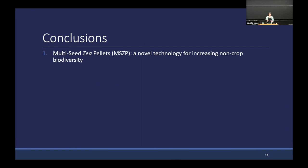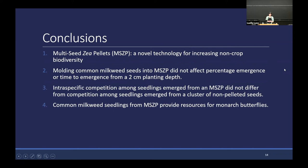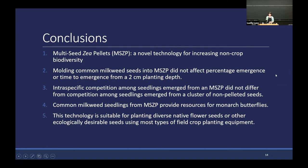Conclusions: we have developed this new technology, which we're calling Multi-Seed Via Pellets, MSVP, intended to increase agroecosystem biodiversity by making it more efficient to establish flower strips. In the experiment shared today and several others, we've seen no evidence that agglomeration in MSVP inhibits emergence from two centimeters depth, growth, or monarch productivity. We're looking towards scale-up now, hoping to pursue field trials in spring 2024. We're also hoping to introduce a wider variety of non-crop species into the system. A lot of the promise of this technology lies in its potential to support a diverse array of species we might want to introduce into agroecosystems, and ultimately growers could choose tailored seed mixes that are site-specific to achieve their ecological goals.